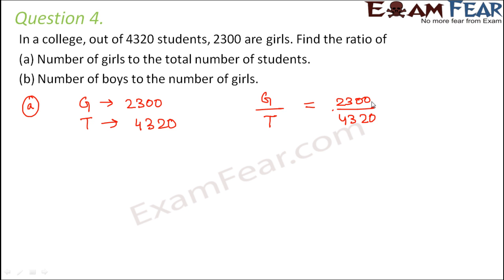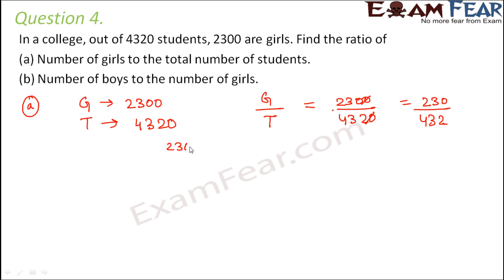In this case, the two zeros will get cancelled because 10 is a common factor for both of these. So this would be 230 divided by 432. This can further be simplified — we can make use of the prime factorization technique.